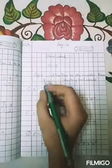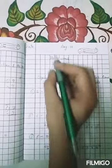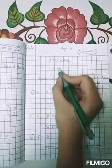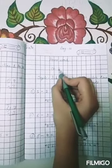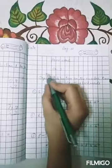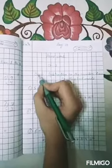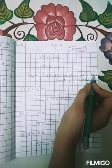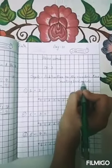So let's start. First mention the date. Homework. Leave a line. Chapter number 3. Again leave a line. Topic: Subtraction on the number line, counting backward.